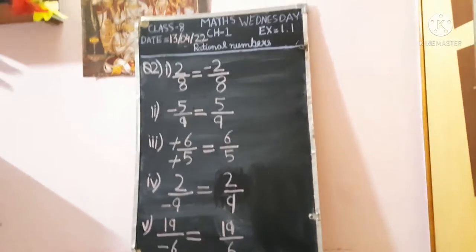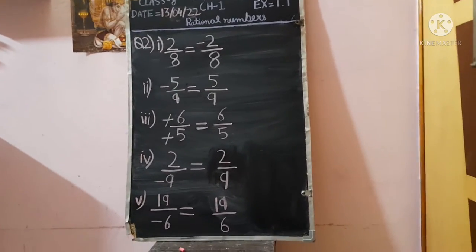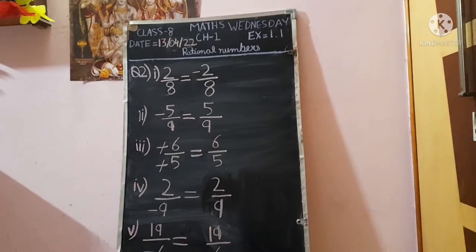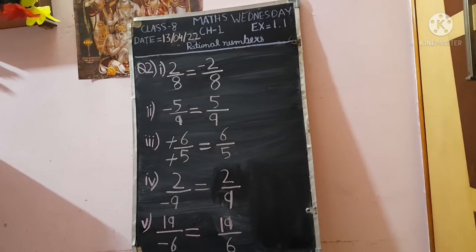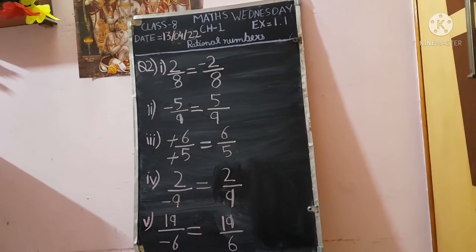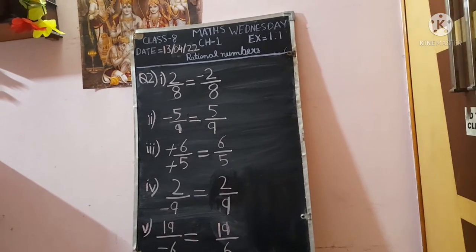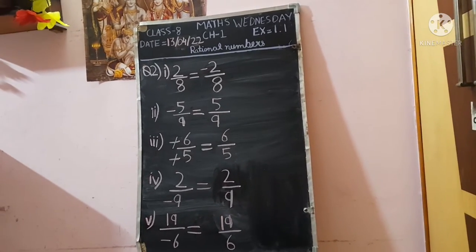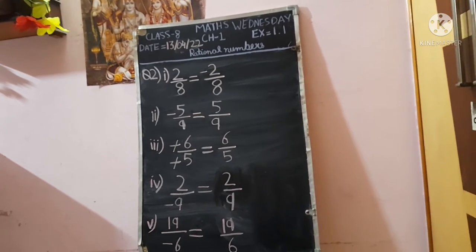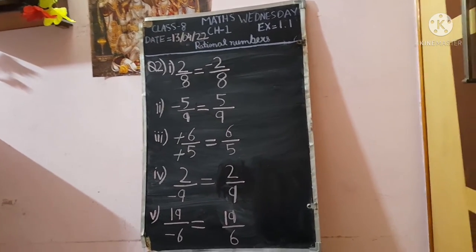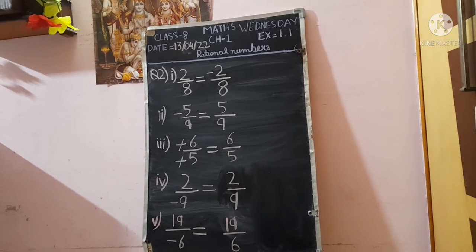So to summarize: additive inverse means that if a number is in minus, its additive inverse will be in positive, and if it is in positive, the answer will be in negative. As you can see — first part 2 upon 8 is positive and its additive inverse is negative. In parts 3, 4, and 5, the question is negative and the answer is positive.